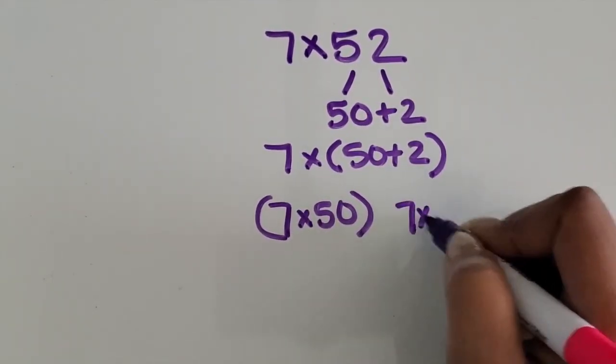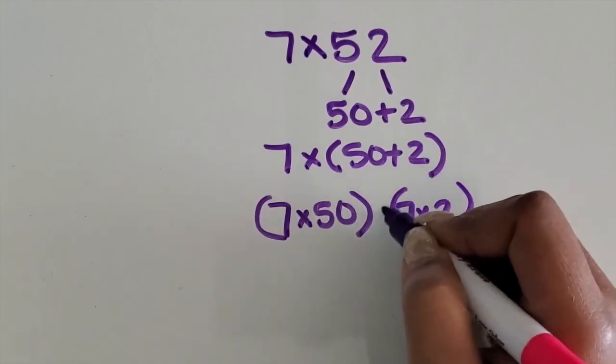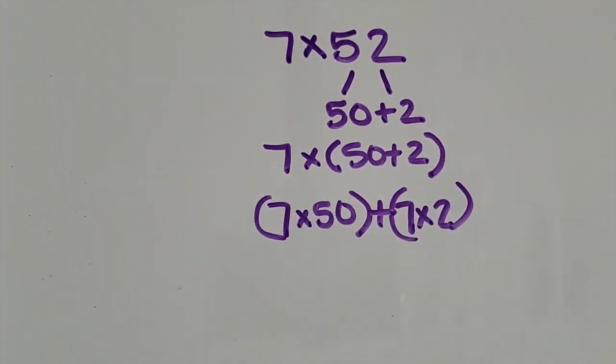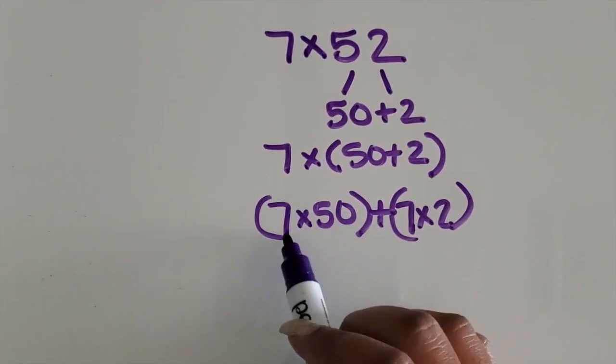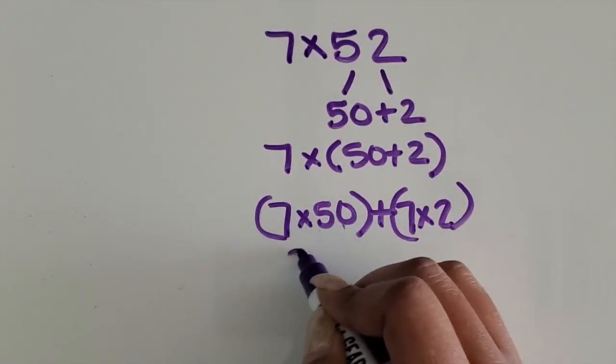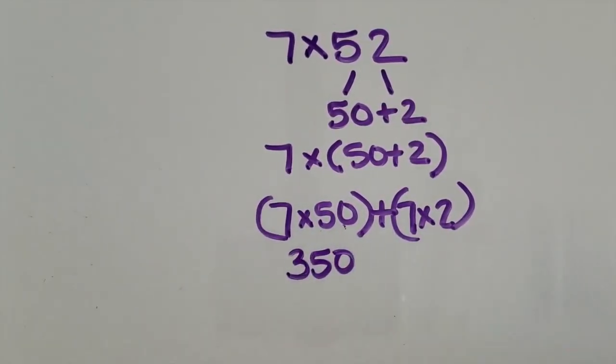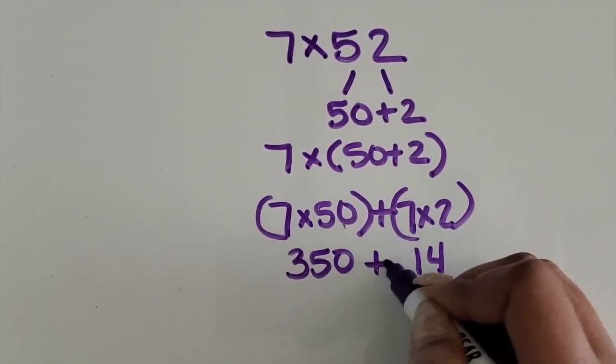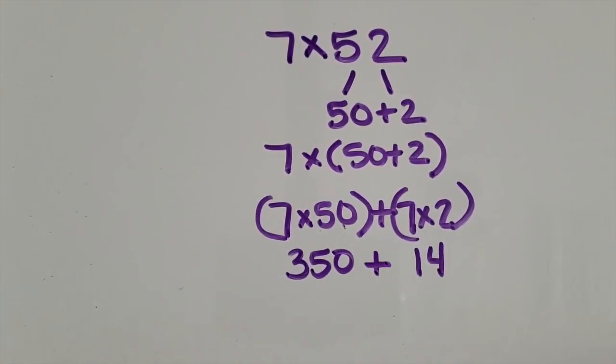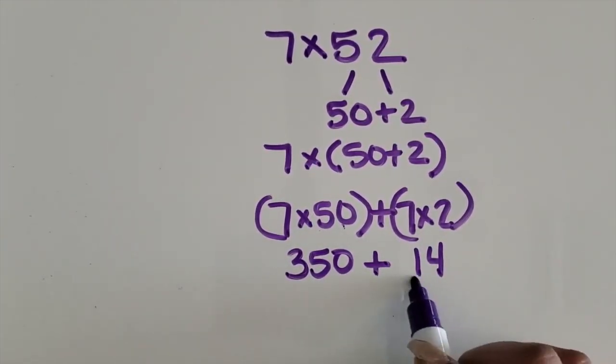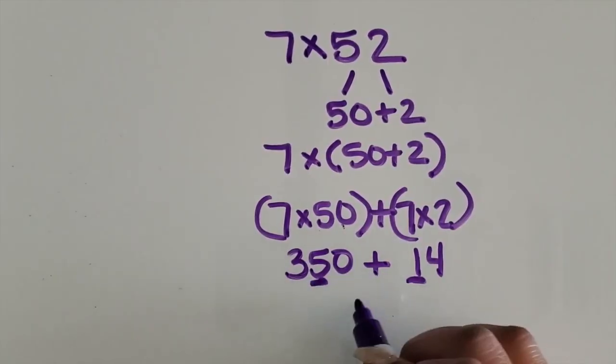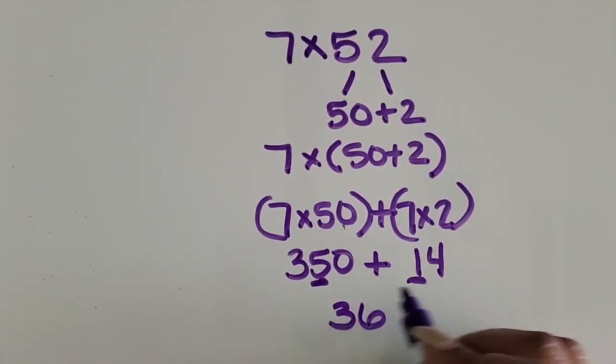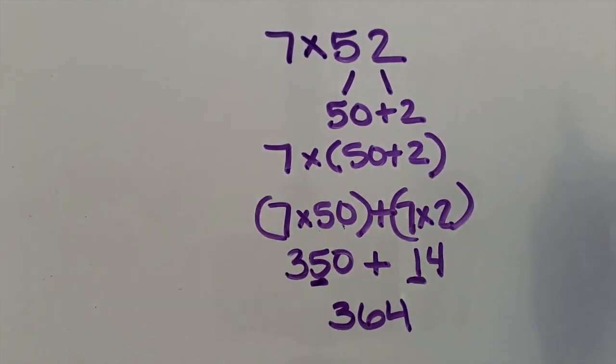Join those two partial products back together. So we know 7 times 50 from the previous problem was 350, and 7 times 2 is 14. The last step that students need to do is to join those products back together. Again, we have 1 ten and 5 tens, so 364 is the product.